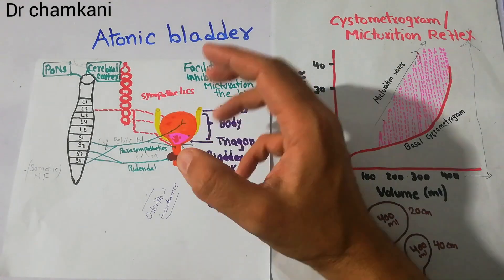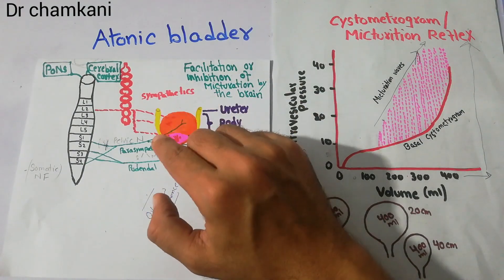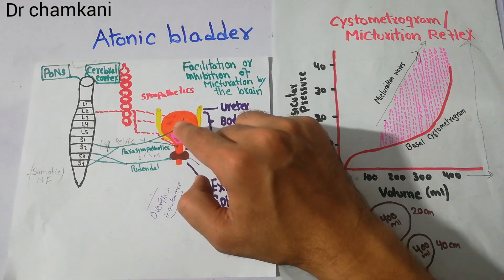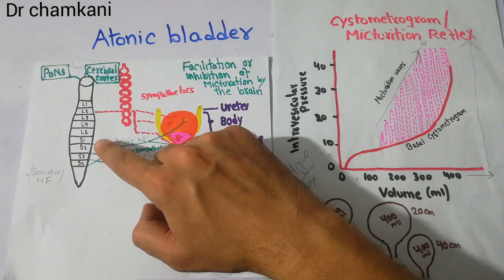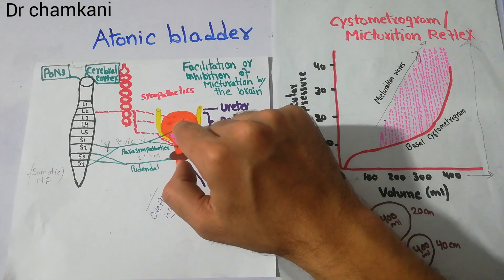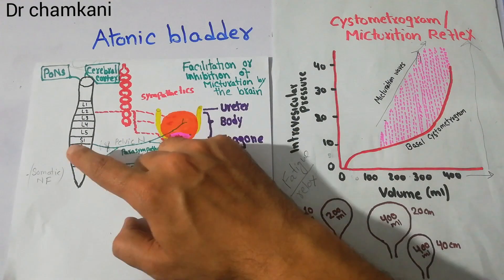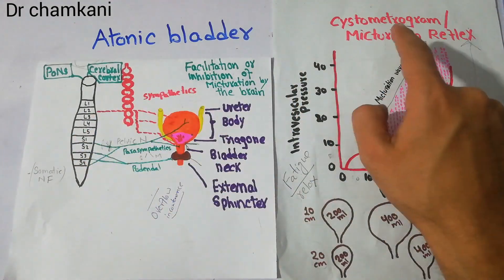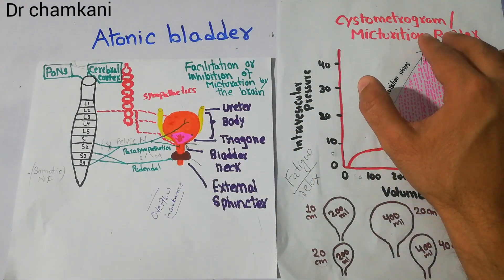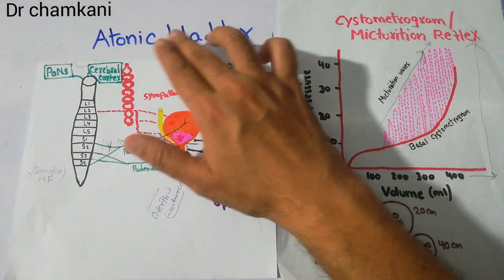The bladder keeps on filling with urine, but the reflex to start emptying cannot occur because it requires signals to be carried from the urinary bladder to the spinal cord. If the nerves taking signals to the spinal cord are damaged, the spinal cord will not be aware of any activity in the urinary bladder. The segment of the spinal cord responsible for the micturition reflex will perceive that the bladder is empty and will never initiate the micturition reflex needed for bladder emptying. Such a condition is known as atonic bladder.